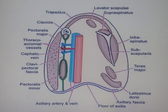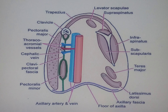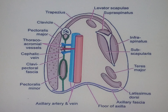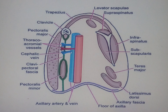Once the acromial thoracic artery comes out, it gives off branches remembered by the mnemonic APCD: A for acromial, P for pectoral, C for clavicular, and D for deltoid branches. These are the branches of the thoraco-acromial trunk.